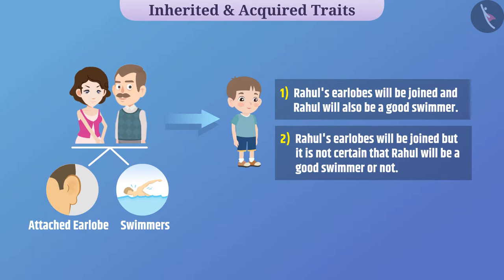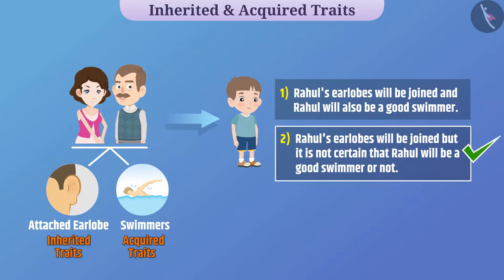Absolutely right! The attached earlobe is an inherited character whereas swimming is an acquired character. Hence, the second option is the correct answer.